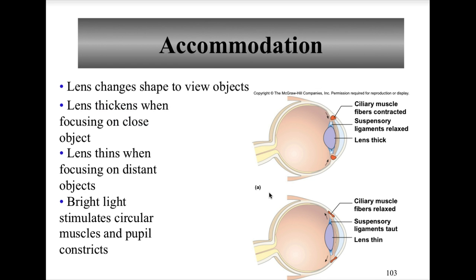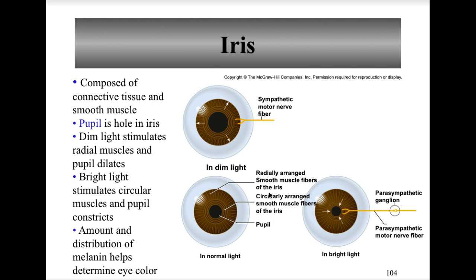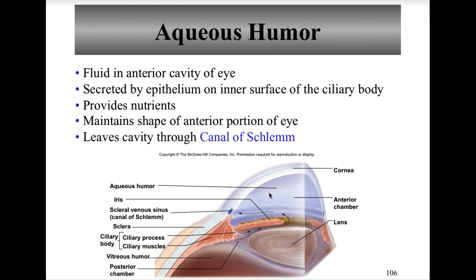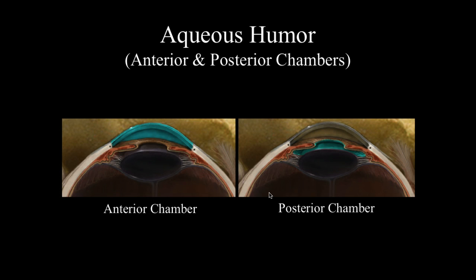The iris is the colored ring around the pupil. It's a thin diaphragm muscle that lies between the cornea and lens. The iris separates the anterior cavity into the anterior chamber and the posterior chamber. The entire anterior cavity is filled with aqueous humor. Aqueous humor nourishes the anterior portions of the eye and helps maintain the shape of the anterior portion of the eye.